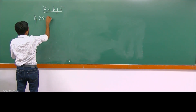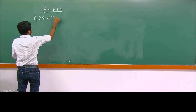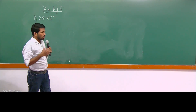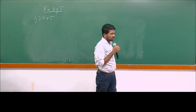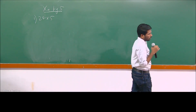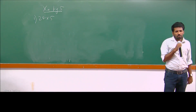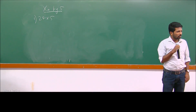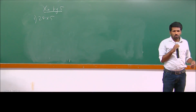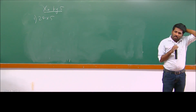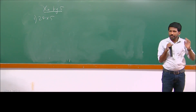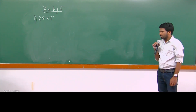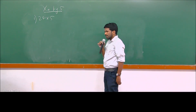24 into 5. We can do 20 into 5 plus 4 into 5. It is easy to multiply by 10 and take the half, or take the half and multiply by 10, because multiplying by 5 is the same as multiplying by 10 divided by 2. We want to do 10 divided by 2 because that is easier.